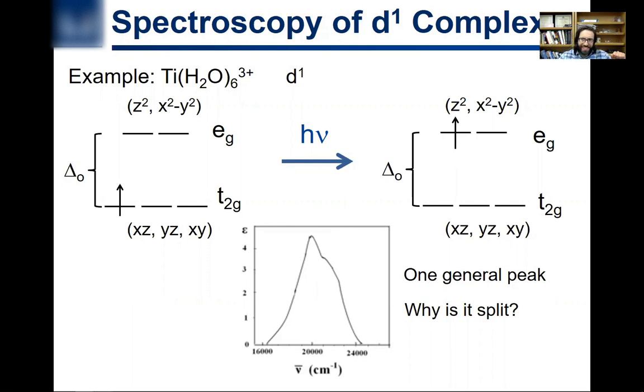What is the UV spectrum of a d2 complex going to look like? It turns out that has more peaks. I think it's three peaks.